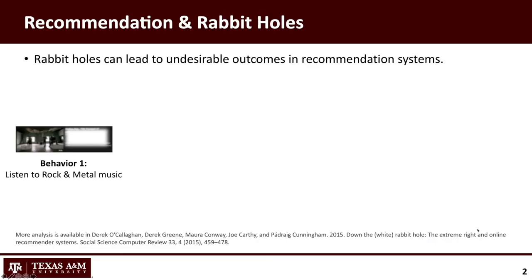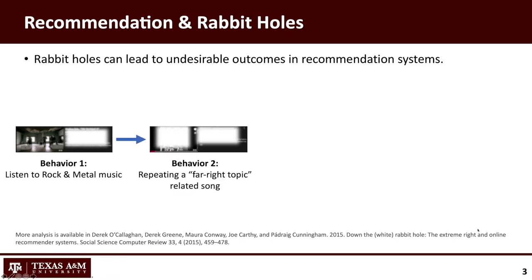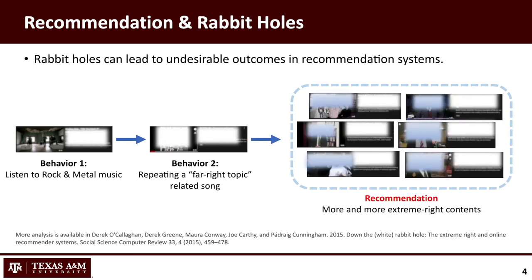First, let's talk about the rabbit holes in the recommendation system. Here is an example. Suppose a user always listens to rock and metal music on the platform. Following some recommendations, this user may repeat a certain music related to the far-right topic. What will happen next? The recommendation system would recommend more and more extreme-right contents, such as related music, videos, and broadcasts, to this user.